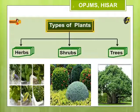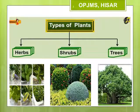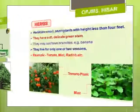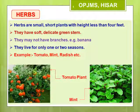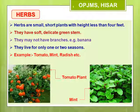On the basis of height, stem type, and branching pattern, plants can be classified into three major categories: herbs, shrubs, and trees. Herbs are small plants with height less than four feet. Their stems are green, delicate, and tender. In herbs, branches may or may not be present and they live only for one or two seasons. Common examples are grass, tomato, mint, radish, wheat, rice, etc.